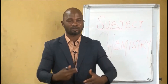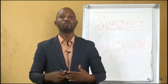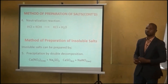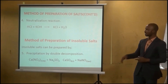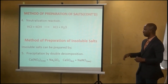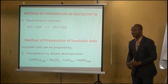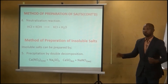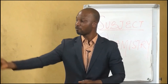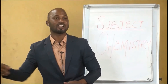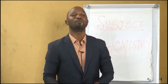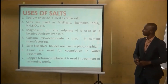For insoluble salts, this is very important especially during qualitative analysis — precipitates formed are usually insoluble salts. These insoluble salts are prepared by precipitation through double decomposition. For example, calcium trioxonitrate(V) plus sodium tetraoxosulfate(VI) gives calcium tetraoxosulfate(VI) plus sodium trioxonitrate(V). In this reaction, the reagents exchange their anions — that is double decomposition — and the insoluble precipitate is formed.